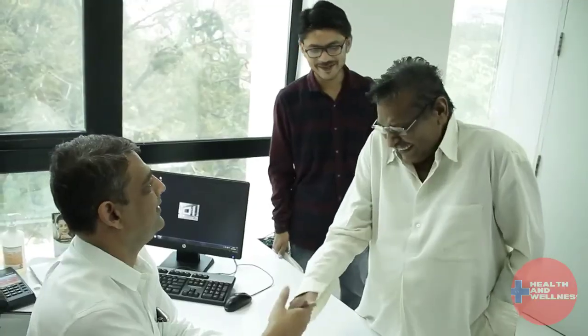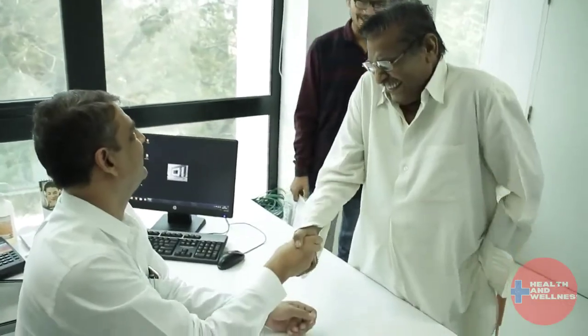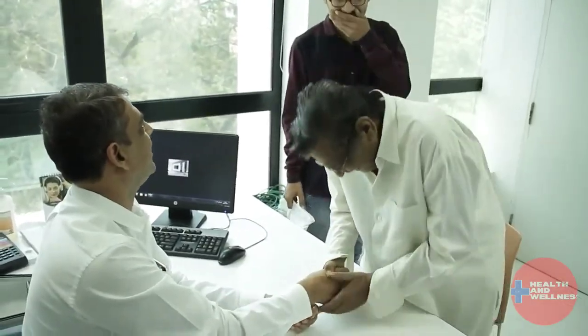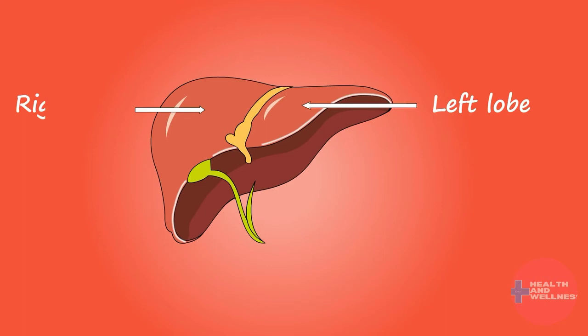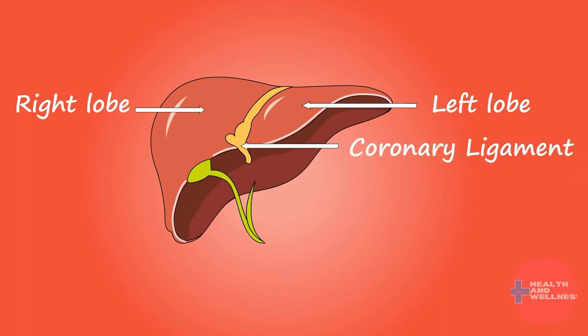The liver is truly the most important organ in the body, performing approximately 200 functions. It has the largest immune system protectors, called phagocytes. Everything possible must be done to secure this vital organ.